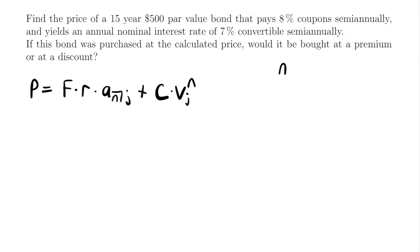How many times would a coupon be paid each year? If it's semi-annual, that means two times per year. So we take 15 years and multiply by 2, which tells us we have 30 semi-annual periods, or 30 coupon periods. So n is equal to 30.